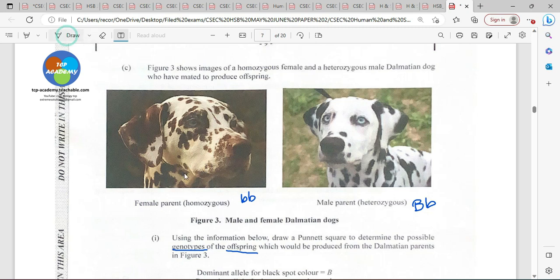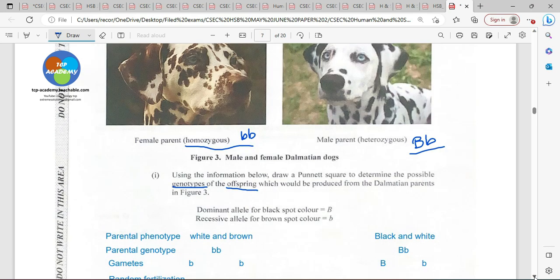There we have the homozygous, and based on what we have here, we strongly think that this is homozygous recessive. And over here, we have the heterozygous dog. Using information below, draw a Punnett square to determine the possible genotype of offspring which should be produced from the Dalmatian parents. The dominant allele for a black spot is B. The recessive allele for a brown spot is common b. Now, of course, by virtue of seeing the black and white dog, heterozygous, we can clearly say that the black color was dominant.